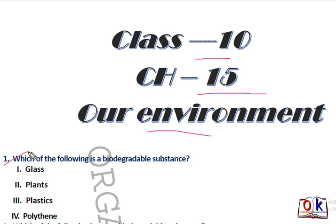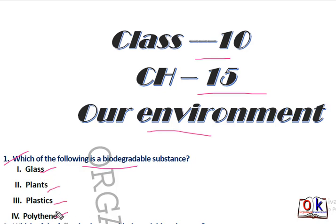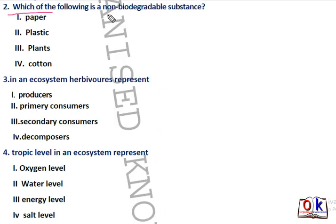First question: which of the following is a biodegradable substance? Biodegradable substances are those which decomposers can decompose. Options are glass, plants, plastic, and polythene. The right answer is plants. Glass, plastic, and polythene are non-biodegradable substances.